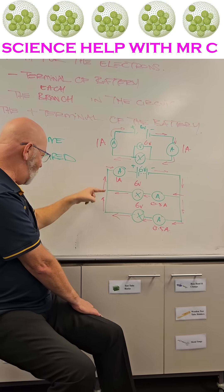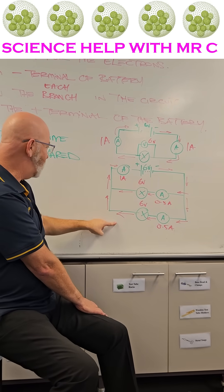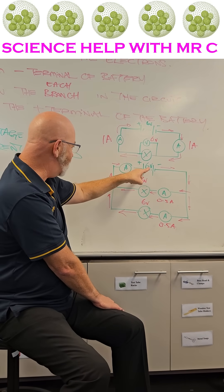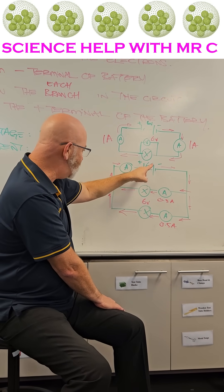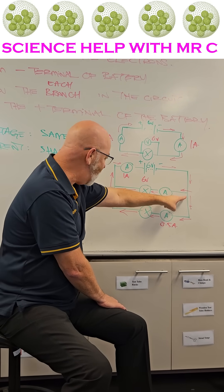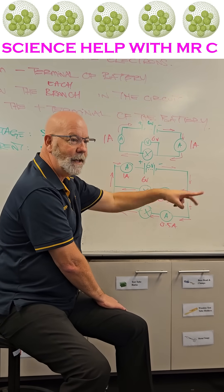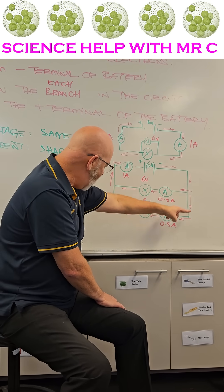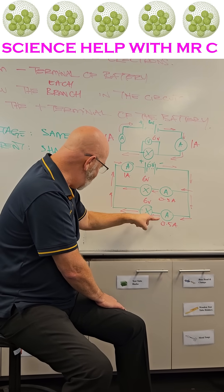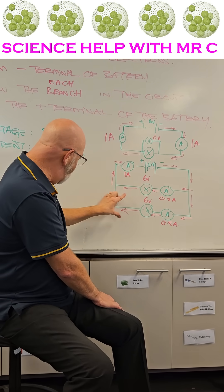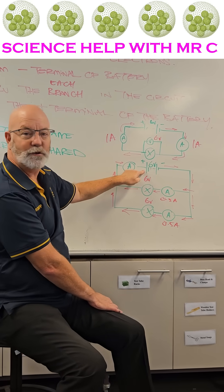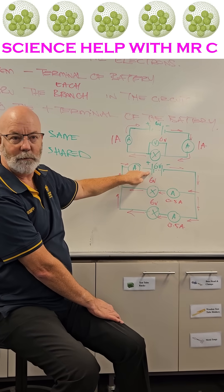When we add another branch, the electrons that are carrying six volts of energy come down here and now they've got a choice. There are two branches, so half go down here and half go down here, then they both match up again to go back into the positive terminal.